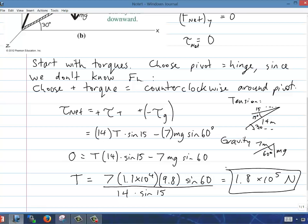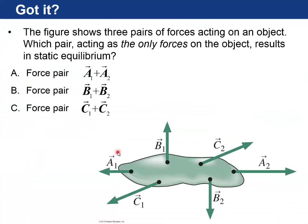Let's see if you've got the basic idea. The figure here shows an object with three pairs of forces acting on it shown, with the length of these vectors being proportional to the magnitude of the forces. Which pair, if it was the only forces acting on the object, would result in static equilibrium? The A1 plus A2, the B1 plus B2, or the C1 plus C2? I'll let you think about that. Press pause, and then we'll resume. I'll tell you the answer.